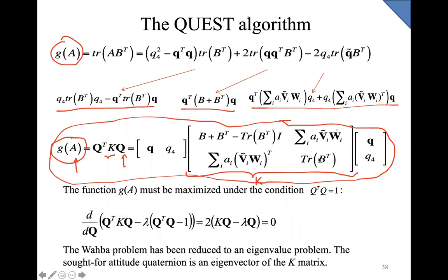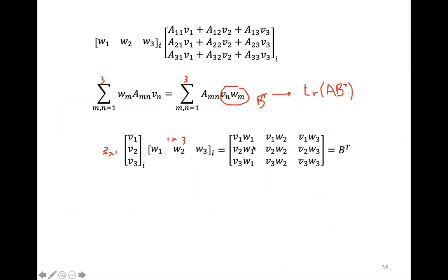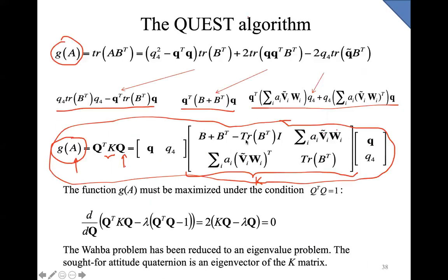All those elements are known because at each instant you have a number of observations N, and you can construct your attitude profile matrix by doing this product. Everything depends on V, W, and the coefficients A. So this matrix is well known every single time. The problem is that we know the cost function, but we need to maximize it. In order to maximize this cost function, we cannot change K — the only thing we can change is Q, which is related to the attitude matrix A.